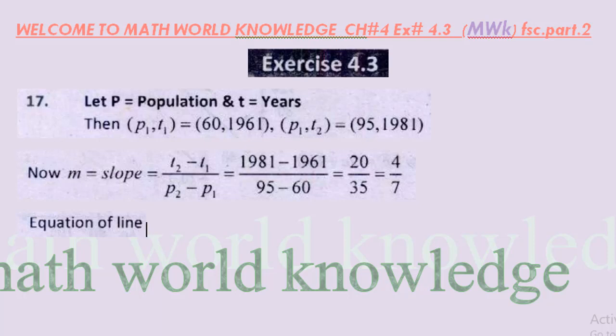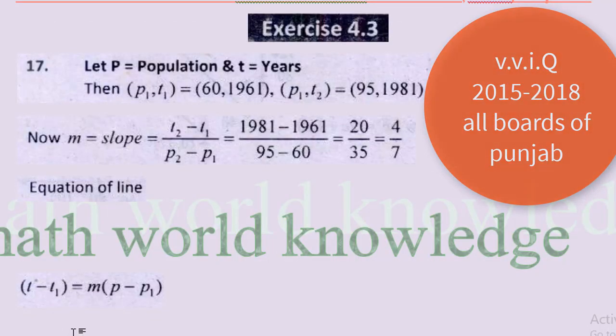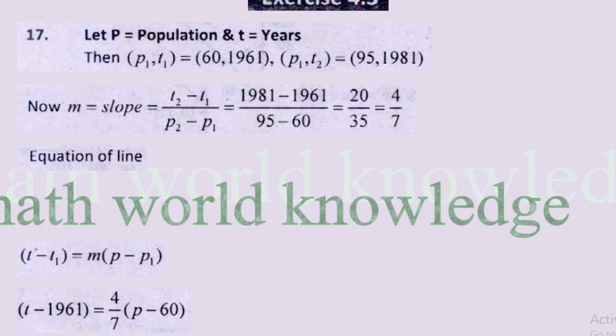Equation of line ka formula: y minus y1 is equal to m into x minus x1. Toh yahan jo equation aap use karne ja rahe hain uska formula banta hai: t minus t1 is equal to m into p minus p1. Putting the values of t1 and p1: t minus 1961 is equal to 4/7 into (p minus 60). Yahan pe hum isko cross multiply kar lete hain.